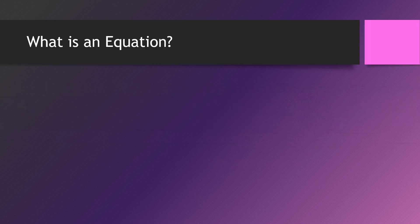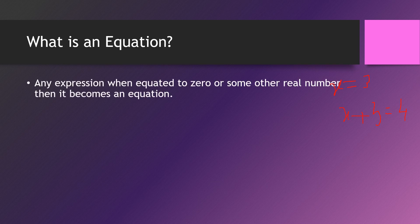What is an equation? An equation means 'equal.' The word 'equate' means equal. So anything which is equal to something is called an equation. If I say x equals 3, it is an equation. If I say x plus 3 equals 4, it is also an equation. Whenever any expression is equated to something, either zero or some other real number, it becomes an equation.